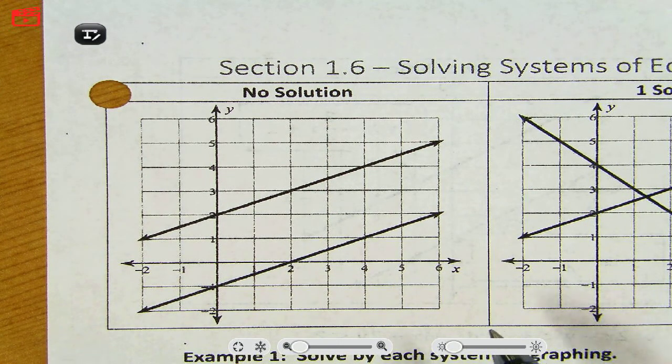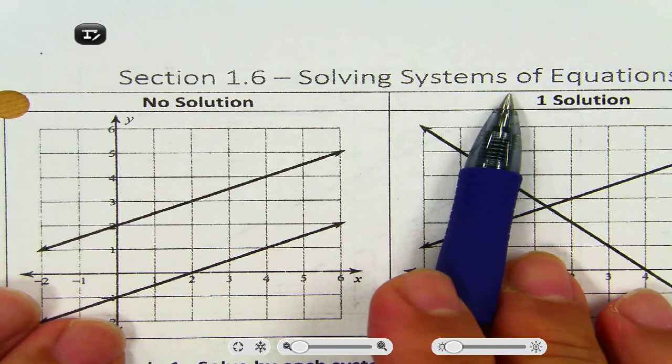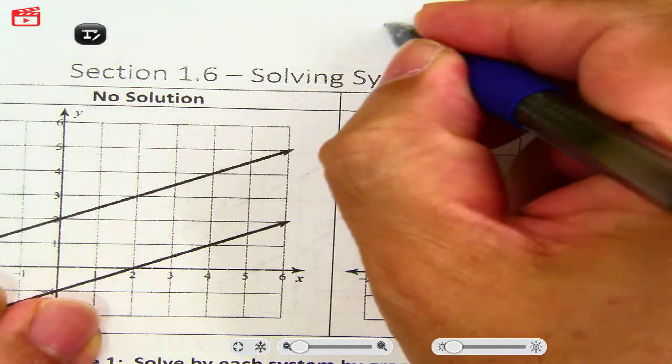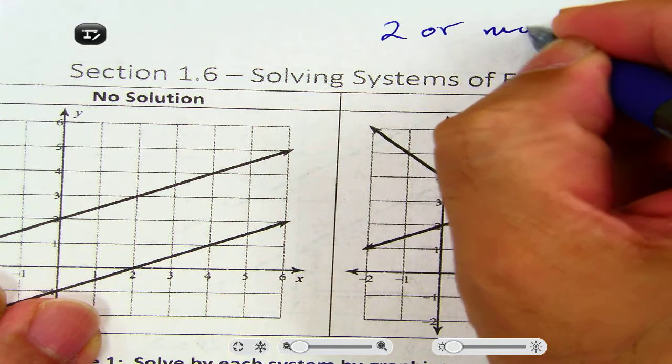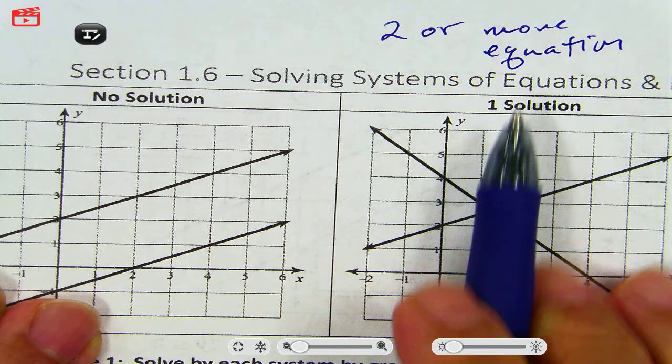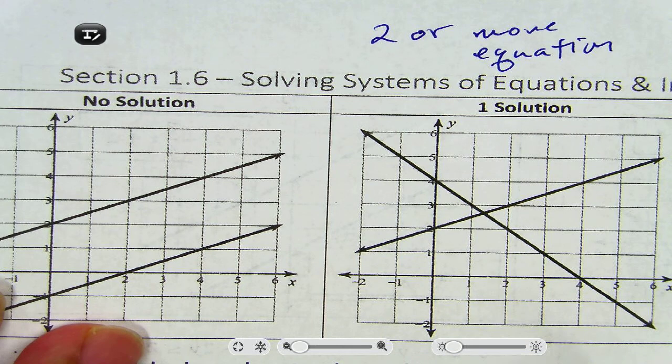Okay, so we're looking at solving systems of equations. We're solving systems of equations. Now, what does it mean for a system of equations? You have to have two or more equations. You can't have a system that's only one equation. You have to have two or more equations. And at the beginning, we're only dealing with lines. We're only going to have lines for these equations.